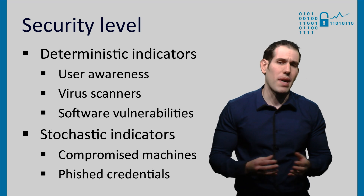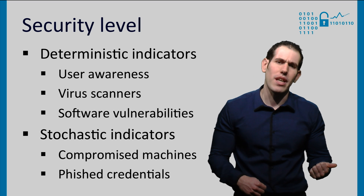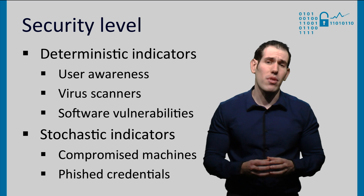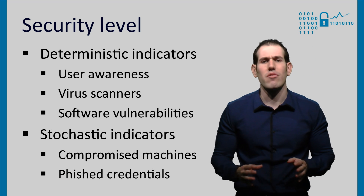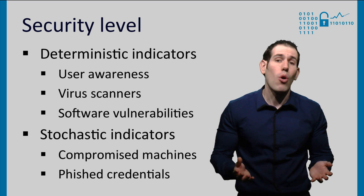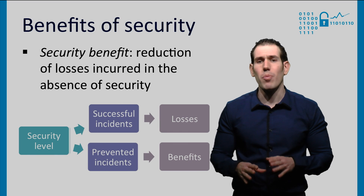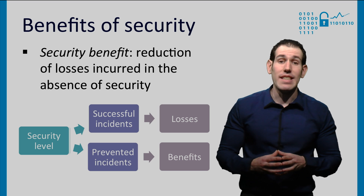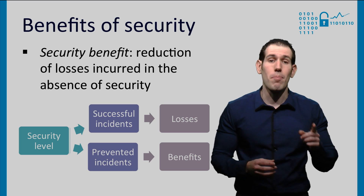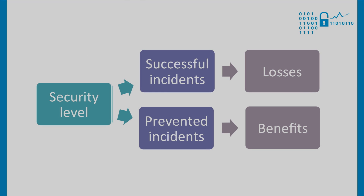For example, deterministic indicators include patch level, existence of intrusion detection systems, and whether virus scanners are in place. On the other hand, examples of stochastic indicators are the incidents reported by intrusion detection systems, the number of fixed passwords, or the number of compromised computers. The last variable we want to measure is the benefits of security. This is the hardest to measure, due to the difficulty of mapping incidents to losses. We can estimate security benefits as the reduction of losses that would have been incurred in the absence of security.